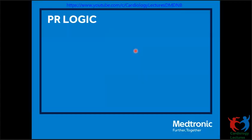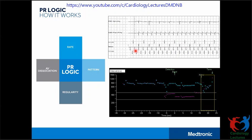Moving on to PR Logic. PR Logic — as the name says, PR represents Pattern and Rate. This is available in our dual chamber ICDs as well as CRTDs. It is not available in the single chamber ICD because it requires inputs from the atrial EGM as well.